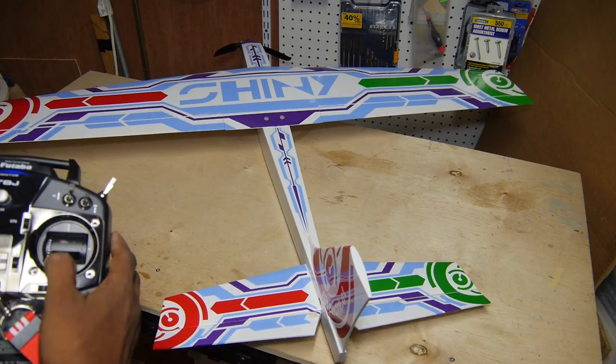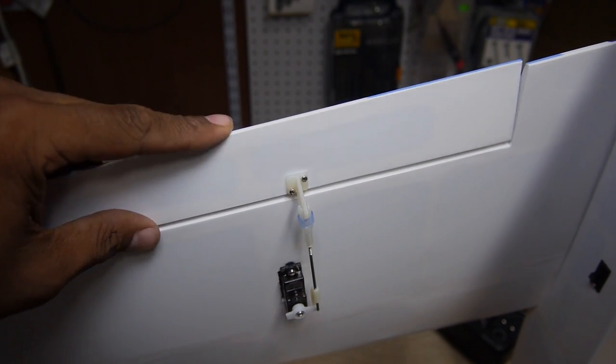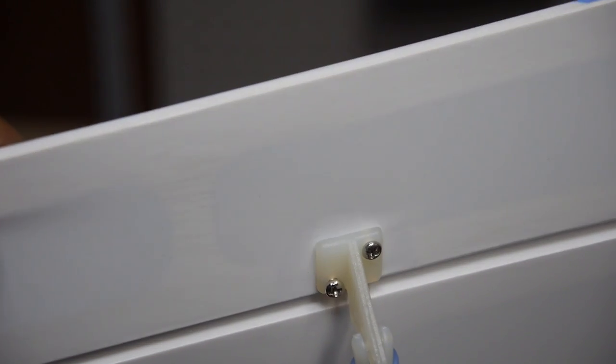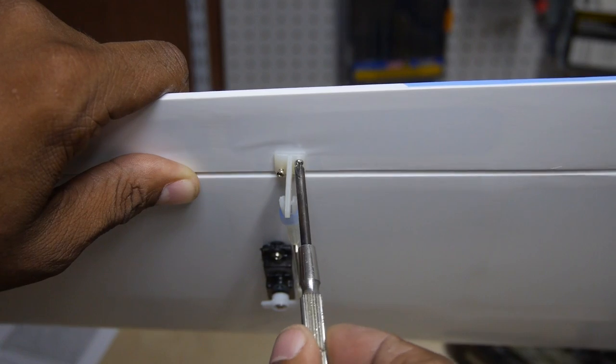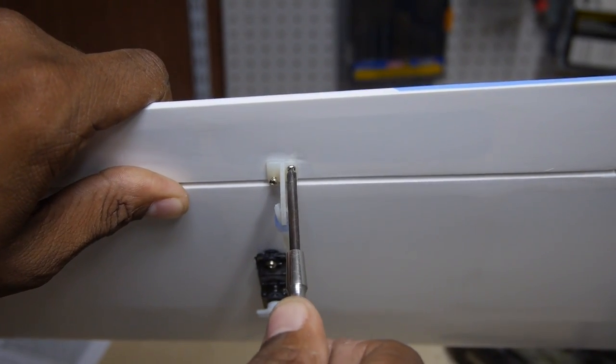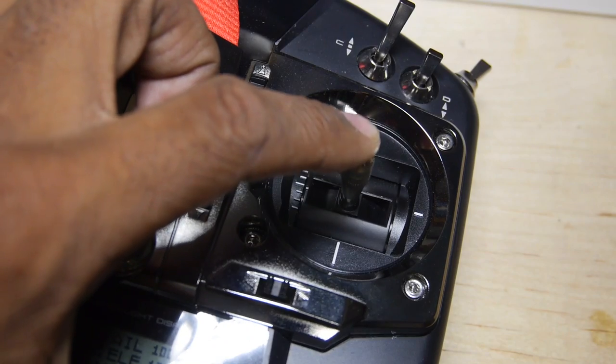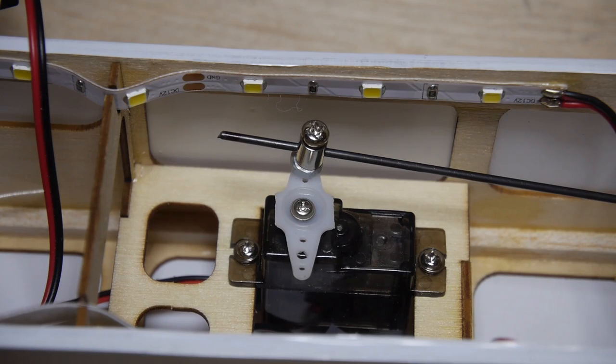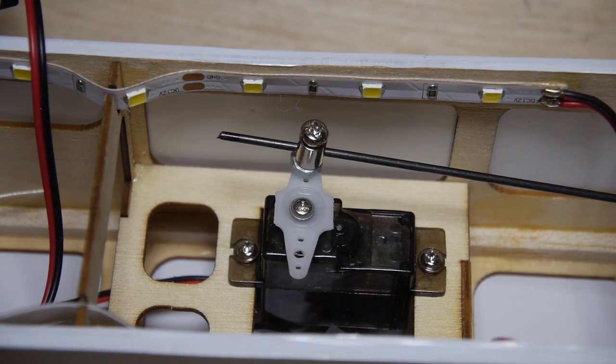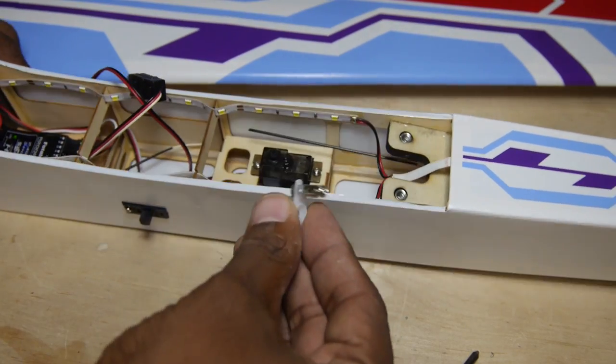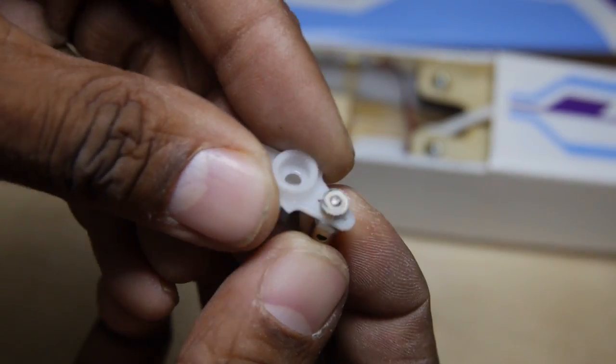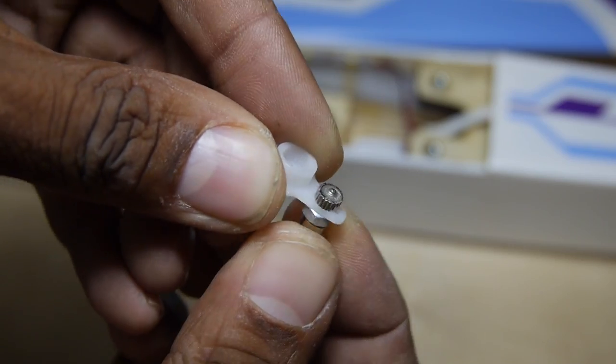And that's when I noticed a couple of issues. First, the aileron horns were a little loose. Then I noticed that the elevator control had significant play. Further investigation showed that the hole in the servo horn was drilled too big.